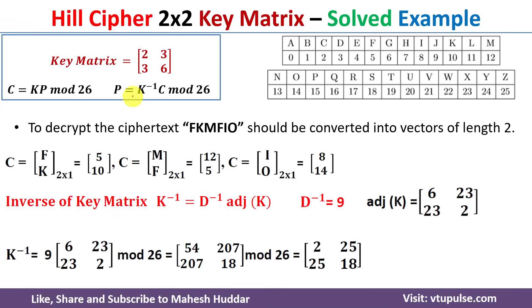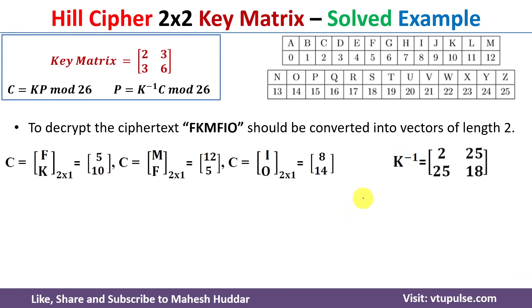Now we compute K-inverse = d-inverse × adjoint(K) mod 26 = 9 × [[6, 23], [23, 2]] mod 26. Calculating: 9×6 = 54, 9×23 = 207, and so on. Taking mod 26: 54 mod 26 = 2, and similarly for the remaining elements. The resulting matrix is the inverse of the key matrix K, which we will now use for decryption.